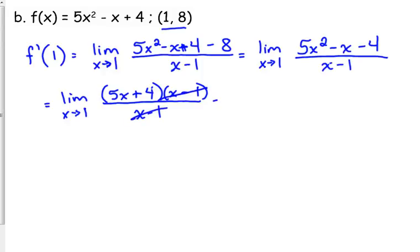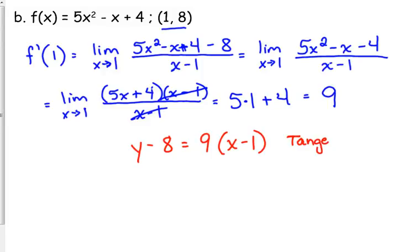So, the x minus 1 is canceled. Then, I can plug in 1 for x. 5 times 1 plus 4 is 9. So, the slope of this tangent line is 9. That means the equation of our tangent line is y minus 8 is equal to 9 times x minus 1. That is the tangent line. The normal line would be y minus 8 is equal to negative 1 over 9 times x minus 1. That is the normal line.